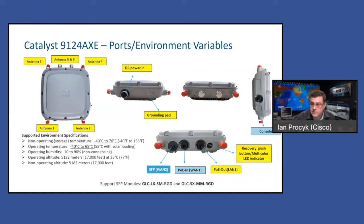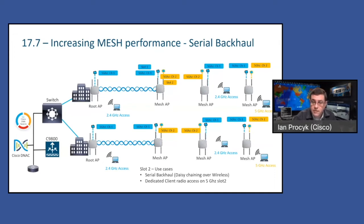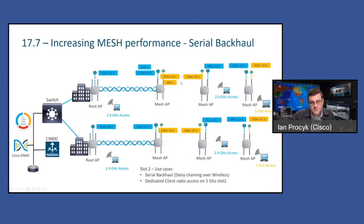The 9124 supports fiber in and copper in, with a wide temperature range as you'd expect. On mesh protocol enhancements — we've been doing work over the last few years on mesh. The serial backhaul application is probably the largest change: we can have uplink and downlink communications taking place in the same chassis at the same time, using one slot for uplink and the other two ports on the radio to extend the chain downstream, without store-and-forward — so we're not sacrificing bandwidth on those hops. This is automated through radio resource management.